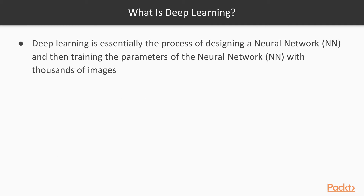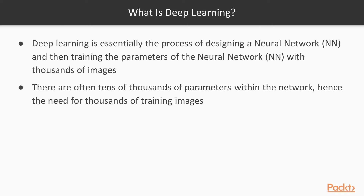So what exactly is deep learning? It's essentially the process of designing a neural network and then training the parameters of that network with thousands of images. We develop this neural network — a very flexible, large graph effectively — give it thousands of training images, and let the network learn an appropriate representation for the task at hand. Rather than designing the model in a bespoke way like in classical machine learning, we say we've got loads of data, let the network learn its own representation, and often you get big gains compared to previous methods.